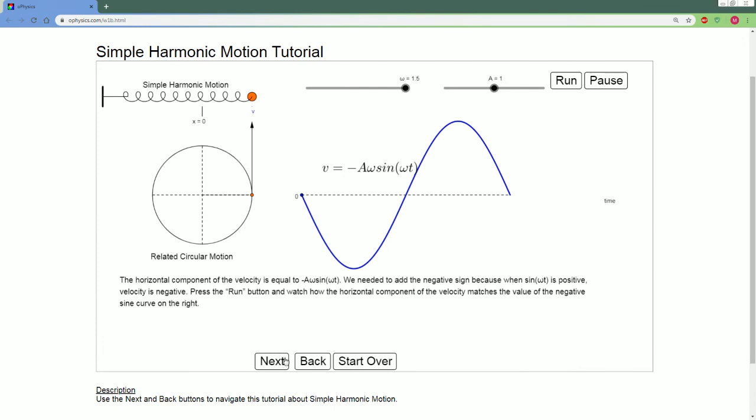So, now if you look at its velocity. Notice it's going to trace this equation: negative A omega sine omega t. This behaves like a sine graph.